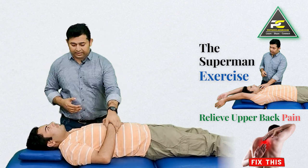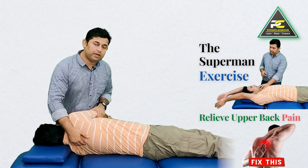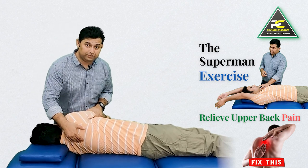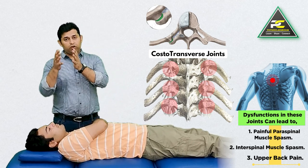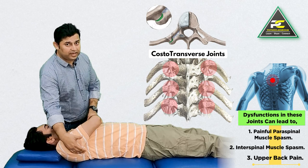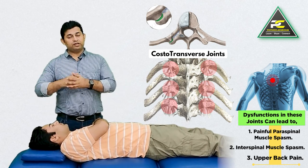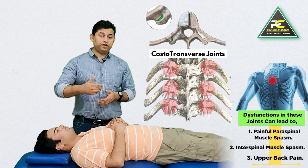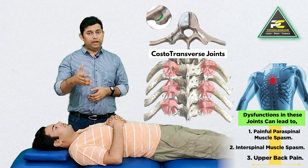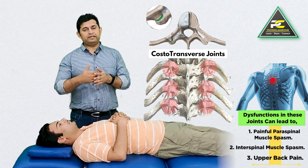...all the pains that originate in the interscapular region are not always coming from the dysfunction of the rhomboids or the trapezius muscle. It is quite a possibility that the costo-transverse joints — that is, the joints between the ribs and the transverse processes of the vertebra — can become dysfunctional and painful. This dysfunction of the costo-transverse joint can in fact be secondary to the painful muscle spasms of the paravertebral, that is the paraspinous and the interspinous muscles.